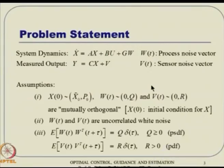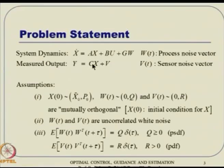Going back, the problem statement turns out to be something very precisely like this. You have got a system dynamics which is ẋ = Ax + Bu + Gw, and the measured output is something like y = Cx + v, where w and v are noise terms — w is a process noise vector and v is a sensor noise vector.